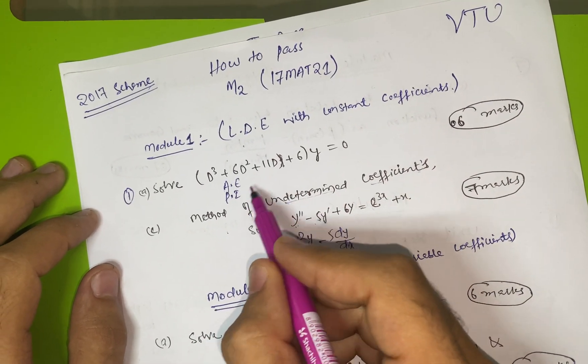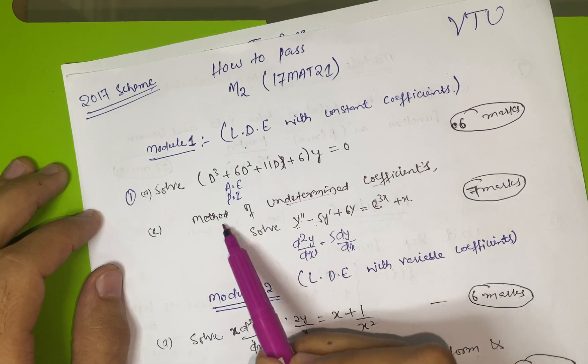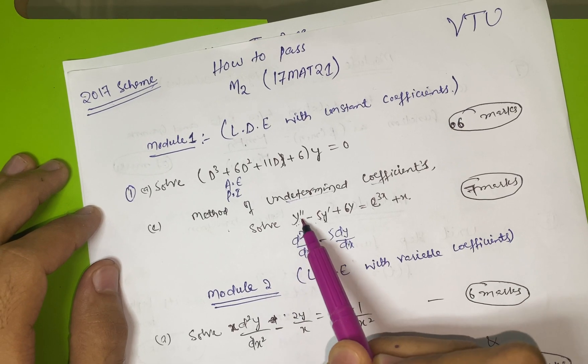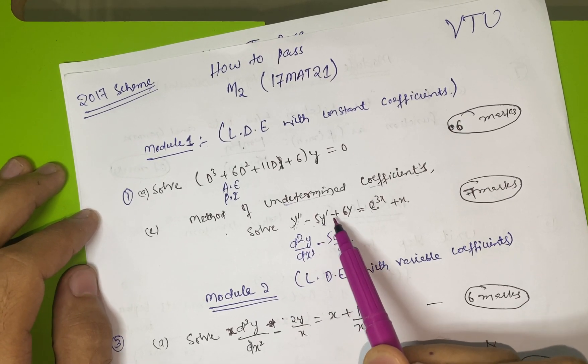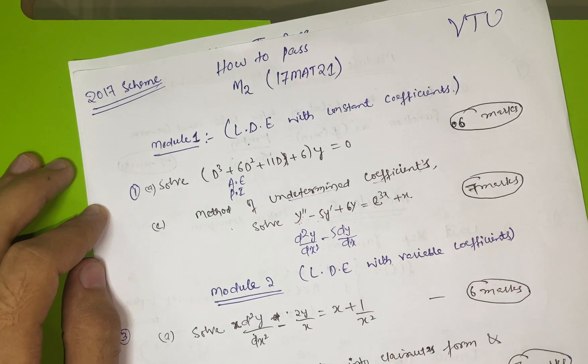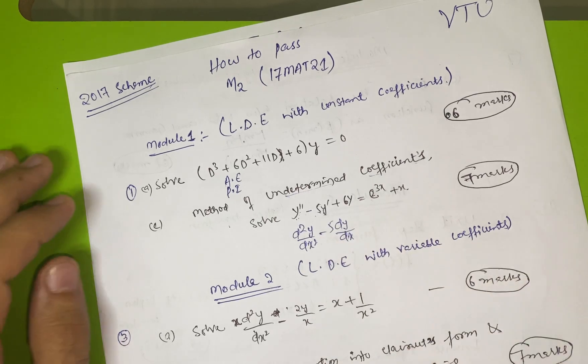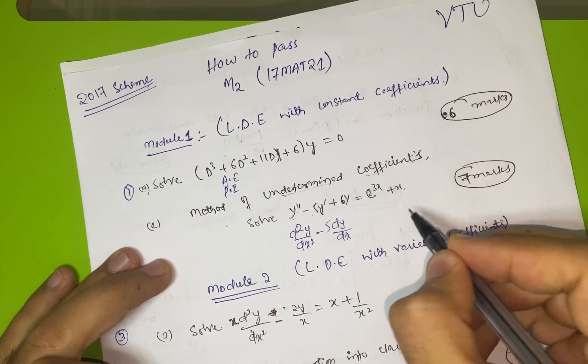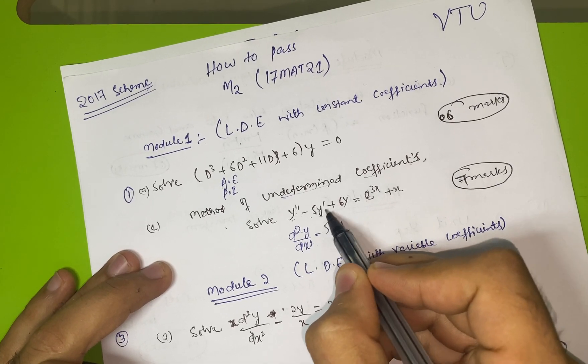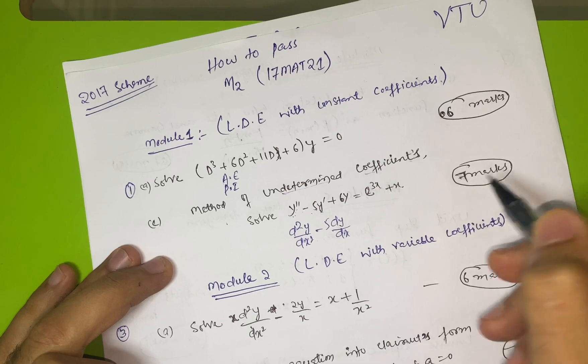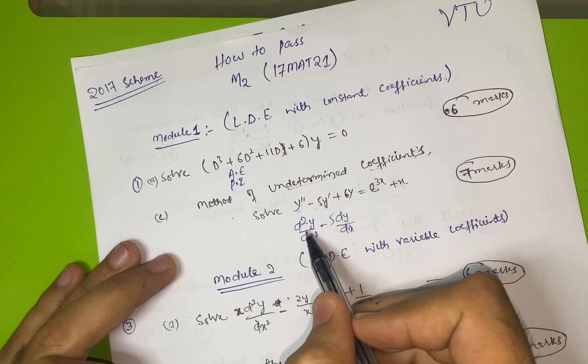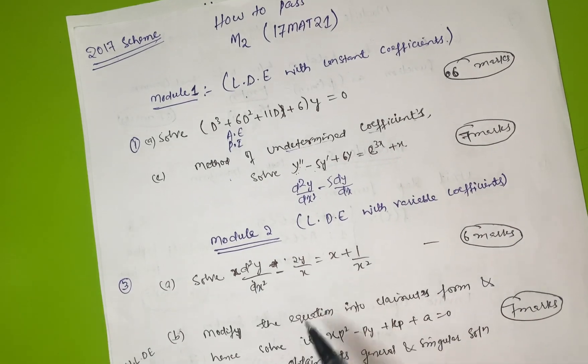Then method of undetermined coefficients is there. They will ask you, suppose solve y'' - 5y' + 6y = e³ˣ + x. Sometimes they give it like that. It's the same term: y'' is also d²y/dx², and y' is also dy/dx. It's just notation which we can change.